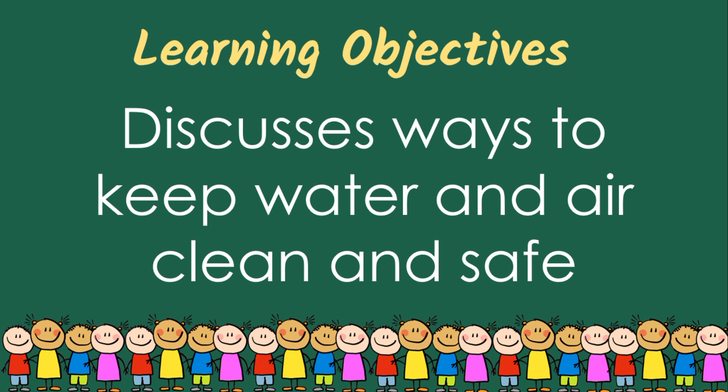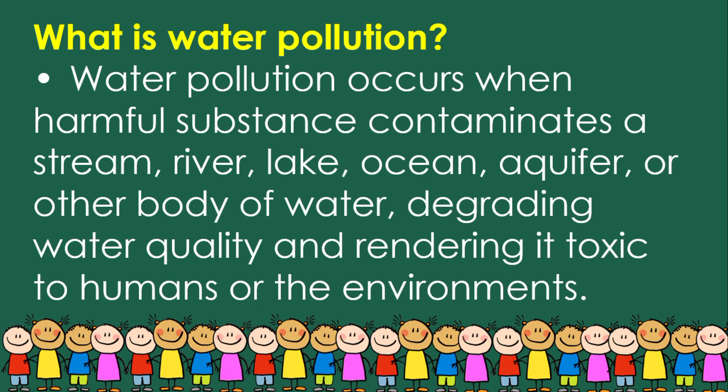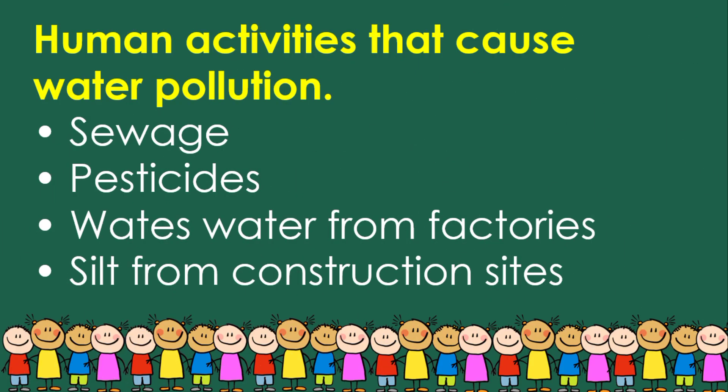What is water pollution? Water pollution occurs when harmful substances contaminate a stream, river, lake, ocean, aquifer, or other body of water, degrading water quality and rendering it toxic to humans or the environment. Human activities that cause water pollution include sewage, pesticides, wastes, water from factories, and silt from construction sites.